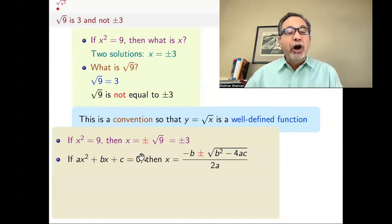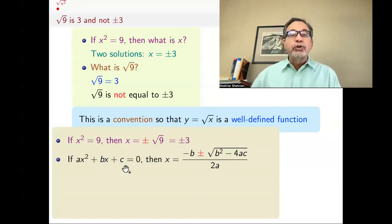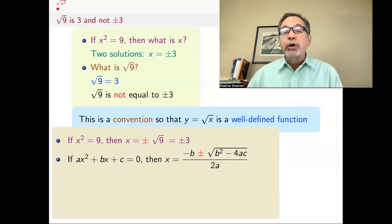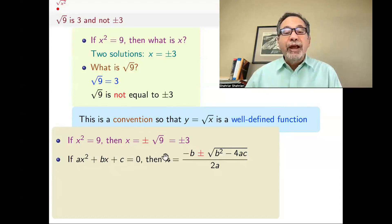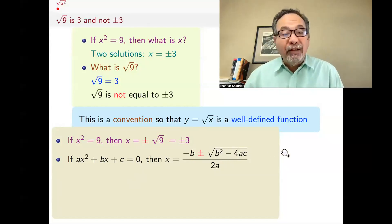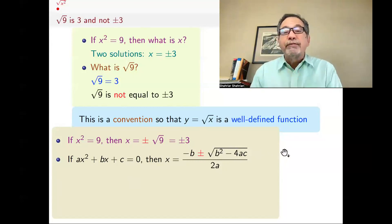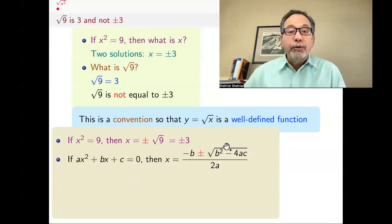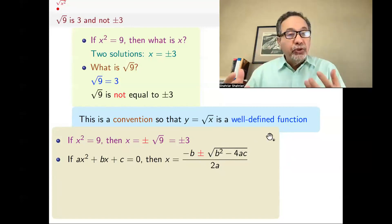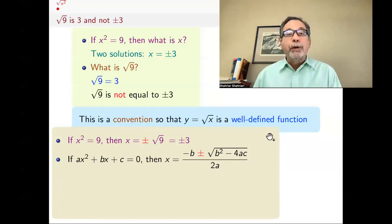The reason is that often when you're solving a quadratic equation — ax squared plus bx plus c equals 0 — often there are two solutions. When you write the square root of b squared minus 4ac, that square root itself, by what I said, just gives you the positive value; it does not give you the two solutions. So you need to put the plus or minus, because you need to get both possibilities.